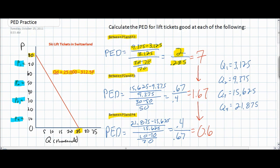This is interesting because if you look at our graph we can see it is clearly a linear demand curve, indicating that the slope of the demand curve is constant. However, as the price of ski lift tickets falls, consumers become less and less responsive to further price decreases. We're going to explore the reasons for this next.